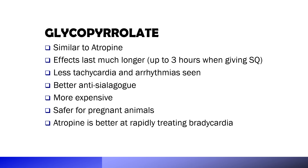Glycopyrrolate has a much longer duration of effect compared to atropine. In terms of side effects, it has less tachycardia and less arrhythmia compared to atropine. It is also a better anti-sialogogue, decreasing salivation more effectively than atropine. It is more expensive and safer for pregnant animals. For treatment of bradycardia, atropine is better because it has a faster onset of action.